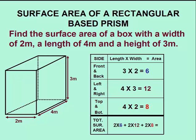Now, all we do is add up the areas of all its sides. We have two sides that are 6 square meters, two sides that are 12 square meters, and two sides that are 8 square meters, giving us a total surface area of 52 square meters.